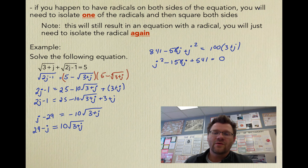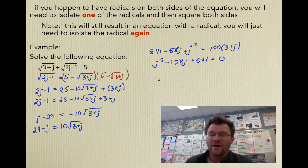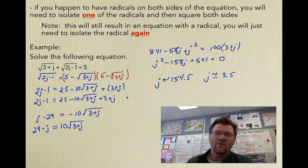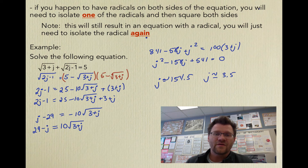You can try to factor this, but the numbers won't be nice, so I used the quadratic formula. When I was done, I found that j equals approximately 154.5 and approximately 3.5. When you have two radicals, you have to square both sides after isolating one radical, then isolate the remaining radical and square both sides again — so be careful with signs and squaring binomials.